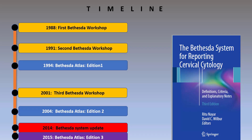The terminology should also reflect current understanding of the biology of cervical neoplasia. This is well demonstrated on the timeline. Since its inception in 1988, the system has been a process in evolution marked by three workshops in 1988, 1991, and 2001, and the 2014 Bethesda system update. In between, there has been the publication of three atlases, with the current edition being edition three, published in 2015.